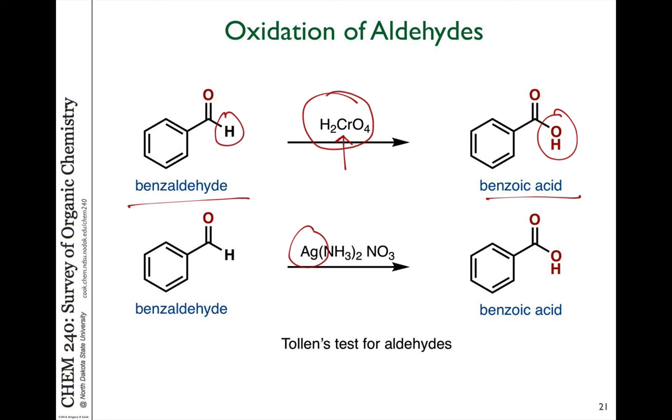So the silver is doing the oxidizing. In the process, silver plus is being reduced to silver zero. And this is a test that was used to test for aldehydes. Only aldehydes will do this because they have a hydrogen which can be oxidized to an OH. Ketones will not.